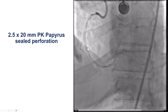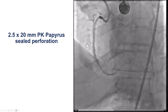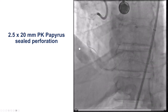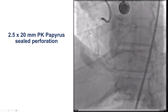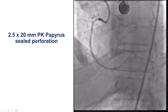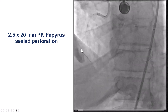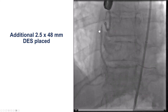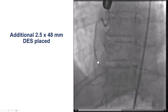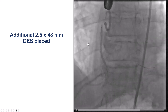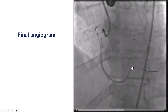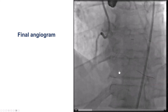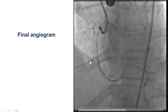We decided to put a covered stent. Although the perforation was in the side branch and often we can coil those branches, we thought that this branch was fairly disrupted. So we decided to cover the whole side branch by using a covered stent — a PK Papyrus stent — which successfully treated the perforation. We also placed a drug-eluting stent, both to cover the areas proximal and distal, and also to potentially decrease the risk of restenosis. This was the final result — not perfect, but we do have TIMI flow into the right coronary artery, and the perforation was sealed.